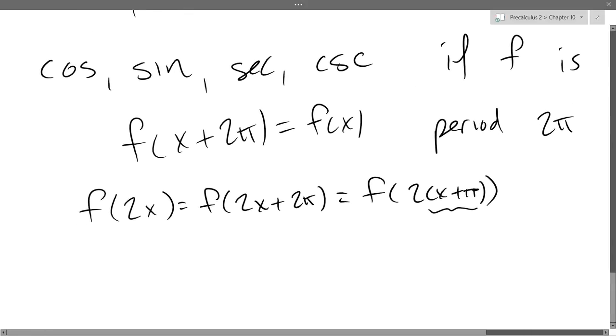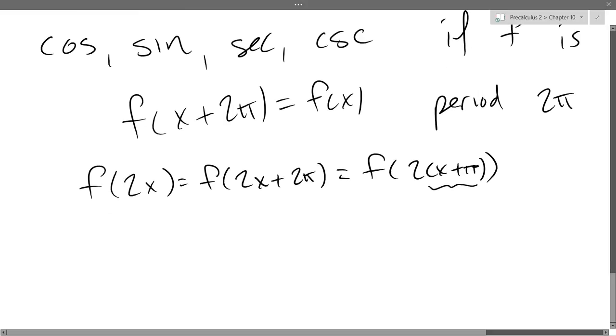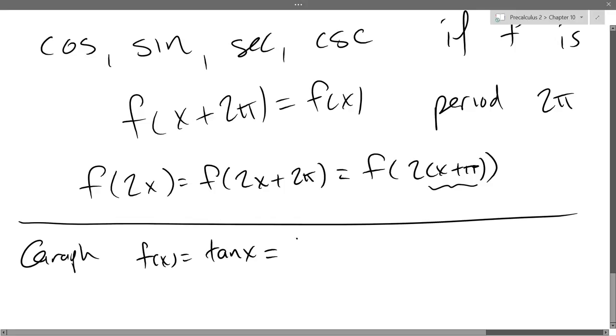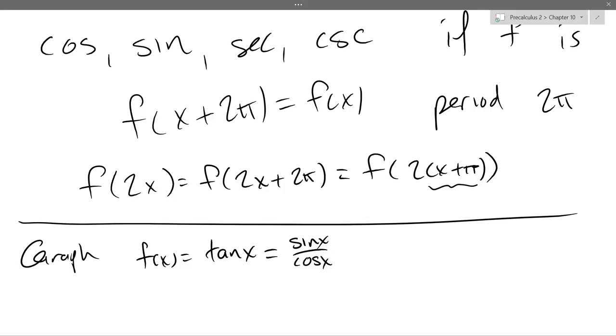So now we're going to go into tangent and cotangent. I did all these four functions first because the standard period was 2π. Tangent and cotangent, it's not the case. We'll start out with tangent, and of course tangent you could write as sine over cosine.